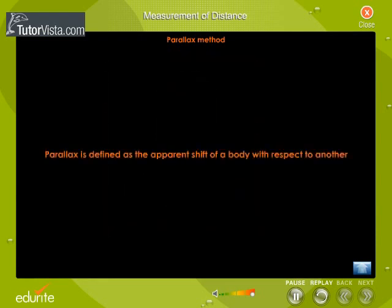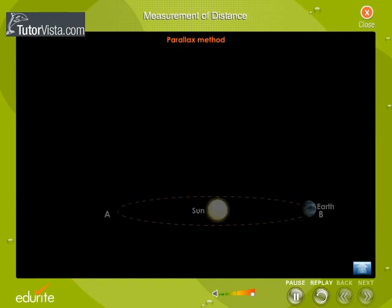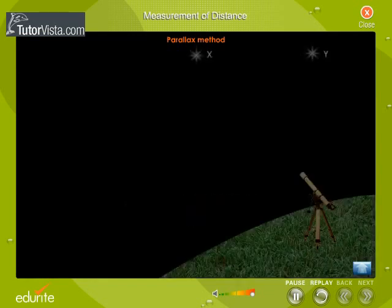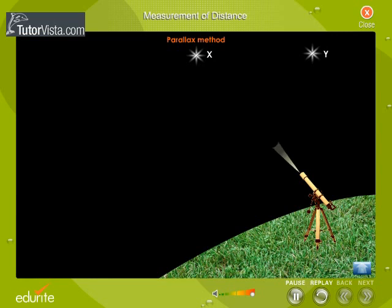Thus parallax is defined as the apparent shift of a body with respect to another. Let us now see how the parallax method is used to determine the distance of a star X from the Earth. Now choose a very distant star Y, whose position and direction remain unchanged even after 6 months. Find out the parallax angle theta between the stars X and Y by focusing the telescope on the star X, and then focus the telescope on the star Y.